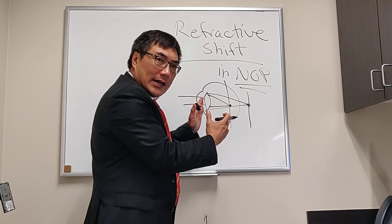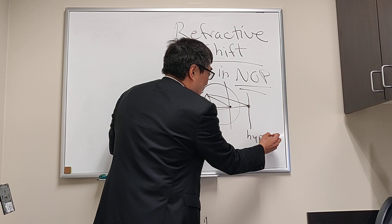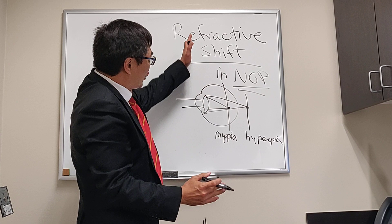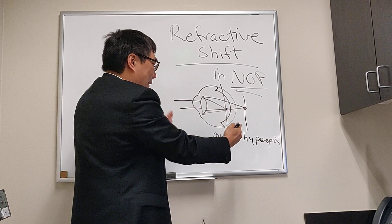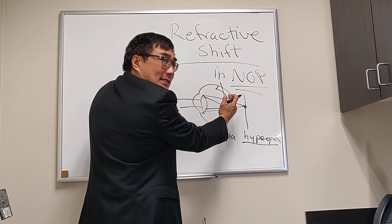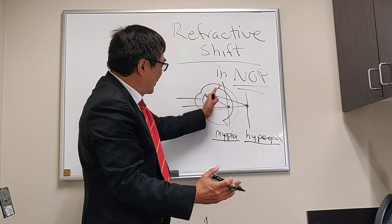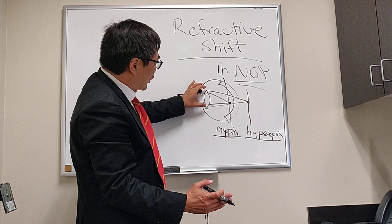So we can have hyperopia or myopia. A shift can occur if the retina is pushed forward, making the eye shorter and causing a hyperopic shift. Or if the lens thickens, that causes a myopic shift. These two mechanisms — a change in the lens or a change in the position of the retina — can result from neuro-ophthalmic disorders.